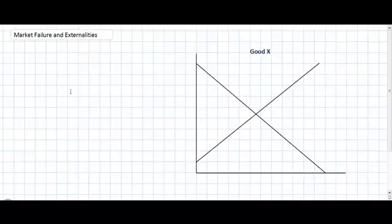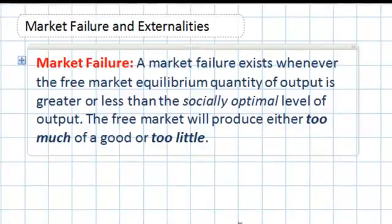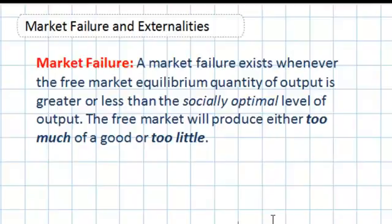Market failure is the examination of a particular instance in which the free market — in other words, when private consumers and private sellers interact with one another — and the equilibrium level of output actually reduces the overall welfare or efficiency in society. A market failure exists whenever the free market equilibrium quantity of output in a market is greater or less than the socially optimal quantity of output. In other words, if a market left to its own devices produces either too much or too little of a good, we say that that market has failed to achieve the socially optimal level of output.